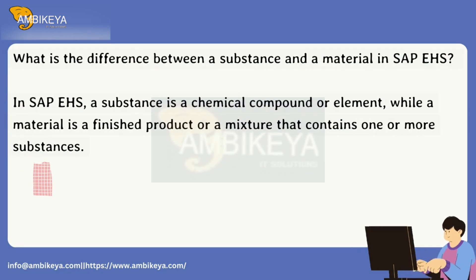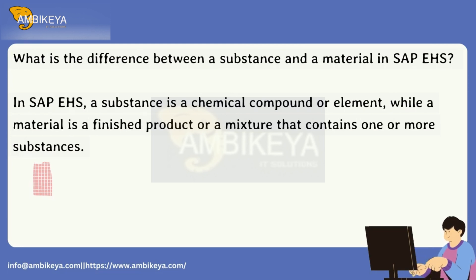What is the difference between a substance and a material in SAP EHS? In SAP EHS, a substance is a chemical compound or element, while a material is a finished product or a mixture that contains one or more substances.